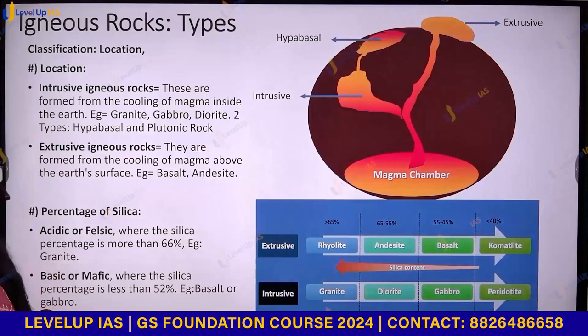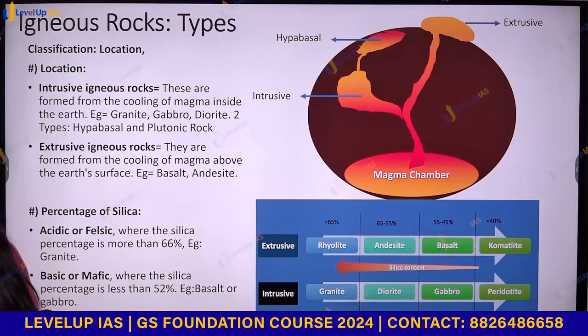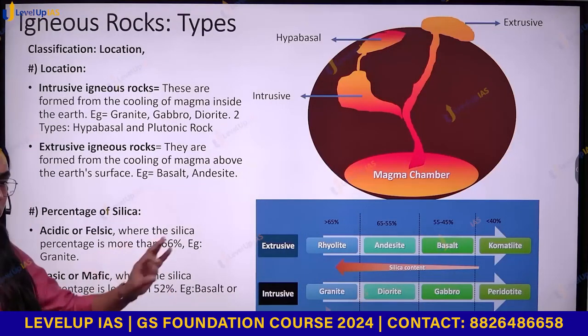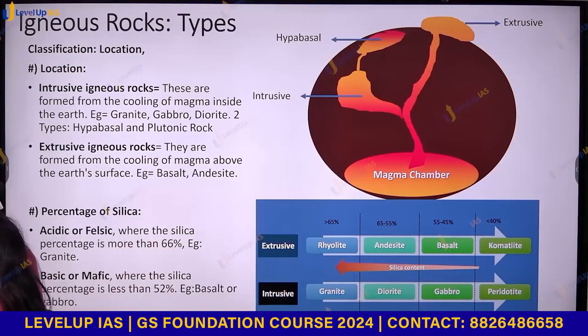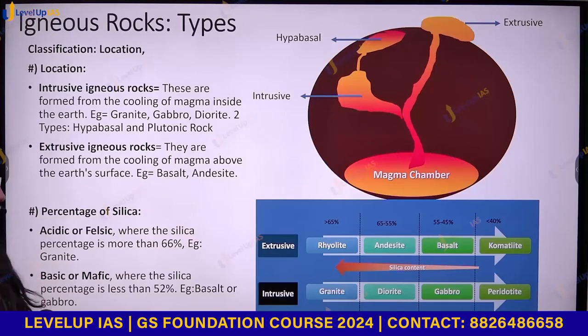This is something you will study in volcanism also, but just to make the link here. So, igneous rock has been formed because of the cooling and solidification of magma. There are three types of igneous rocks.